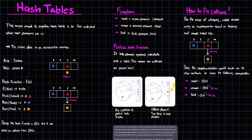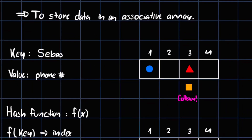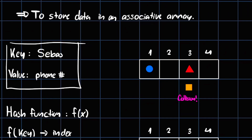So hash tables — what are they? The most simple way to explain hash tables is to first understand what their primary role or use is. The most important part is to store data in an associative array. In order to understand this, we have to understand how each element works. This whole box is our element, and this element will have an index — it's going to be stored in a table with an index, let's say 3.